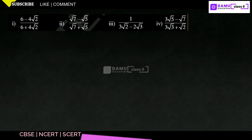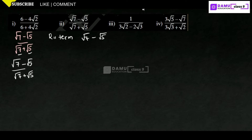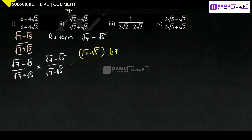Our second problem is (root 7 minus root 5) divided by (root 7 plus root 5). The rationalizing term is found by keeping the terms the same but changing the sign, giving root 7 minus root 5. We multiply and divide by (root 7 minus root 5), writing the expression as (root 7 minus root 5) times (root 7 minus root 5) divided by (root 7 plus root 5) times (root 7 minus root 5).